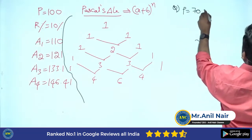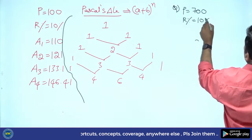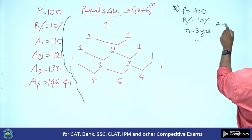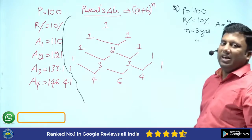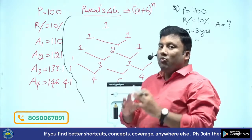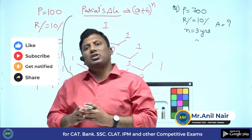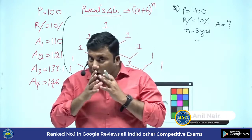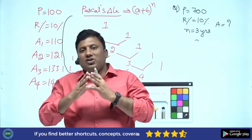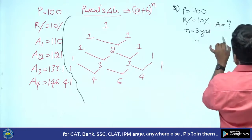Here's an example: Principle is 700, R is 10 percentage, N is 3 years. Amount is how much? P is 700, R is 10 percentage, N is 3 years. Whenever you see N equal to 3 years, use the coefficients of (a + b) power 3.